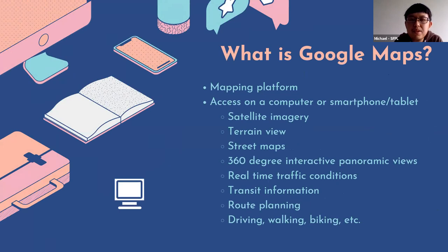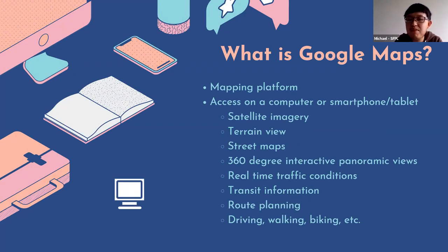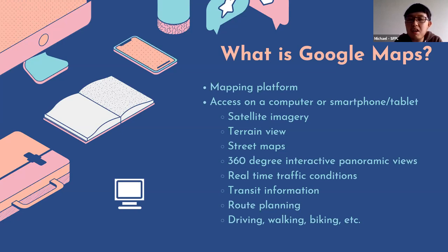So what is Google Maps? Google Maps is an online mapping platform. You can access it on a computer, smartphone, or tablet. If you're using a computer, you go to your favorite browser and type in the URL address for Google Maps. If you're using a smartphone or tablet, it depends on which device you have — you might have to download the app.